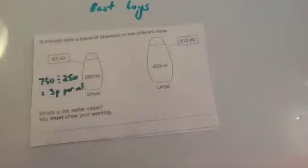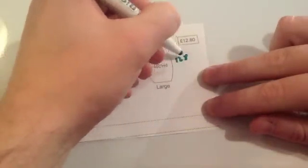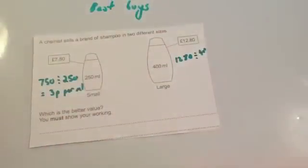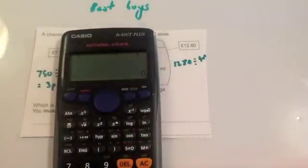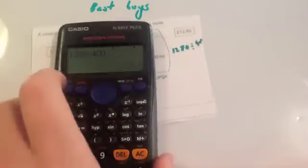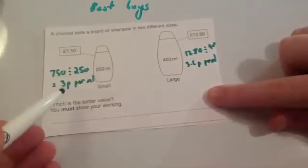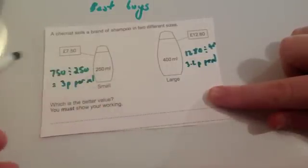This one, it's going to be 1280 pence divided by 400. £12.80 divided by 400 is 3.2 pence, so you get 3.2 pence per milliliter. Therefore, because this one's obviously cheaper per milliliter, this one's the best option, so the small one's the best value for money.